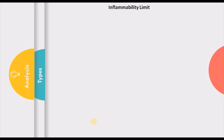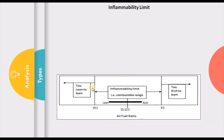Now, is it that you can supply the engine any quality of mixture and it will burn? The answer is no. There is what we call the inflammability limit. For gasoline, the inflammability limit is from 9:1 to 19:1. Beyond 19:1, the mixture becomes too lean to burn, and below 9:1, the mixture becomes too rich to burn. When the amount of air is more than 19:1, the mixture is too lean to burn. When the mixture has less than 9 units of air per unit of fuel, it becomes too rich to burn. The stoichiometric value falls within this range, and 9:1 to 19:1 is the inflammability limit.